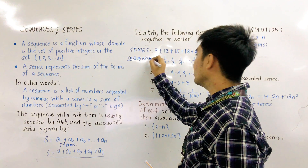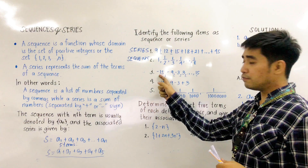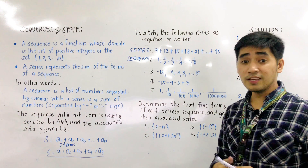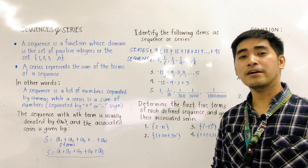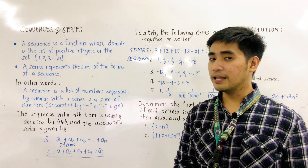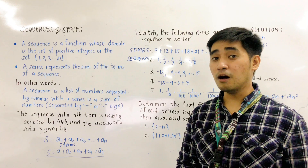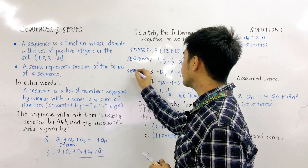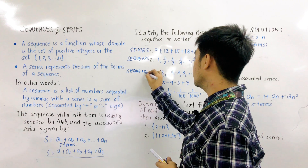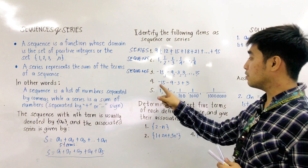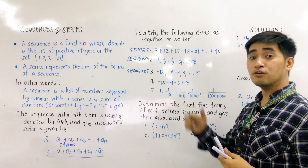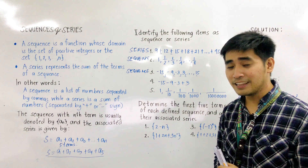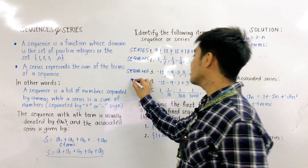For the third one, we are given: -15, -9, -3, 3, up to 15. Again, it is separated by commas, so we call this a sequence. For the fourth one, we are given: -15 - 9 - 3 + 3. Separated by plus or minus, we call this a series.